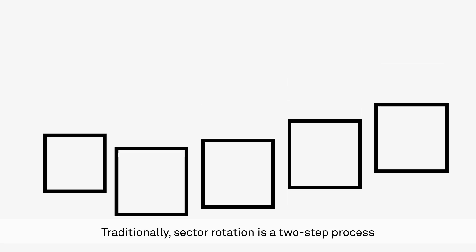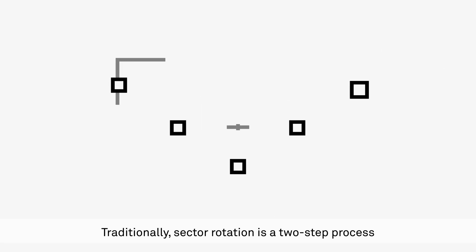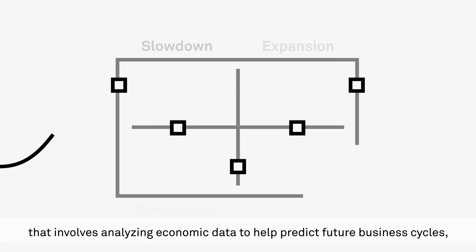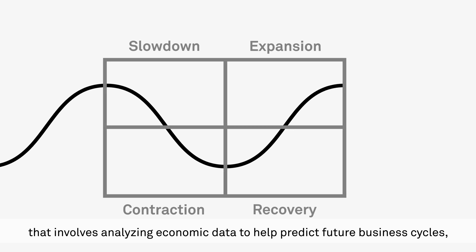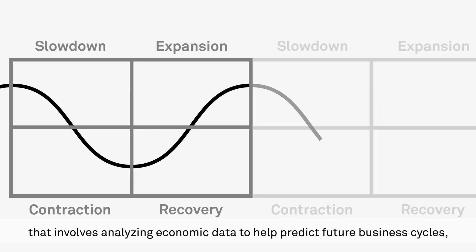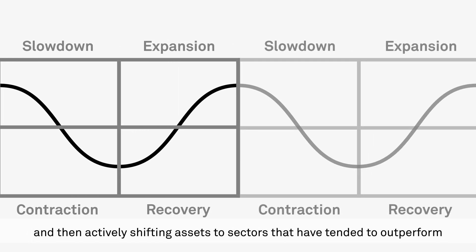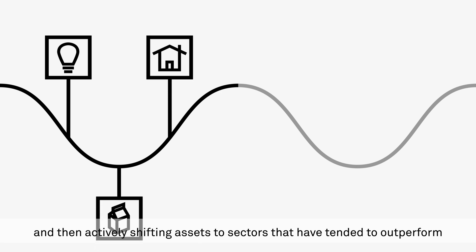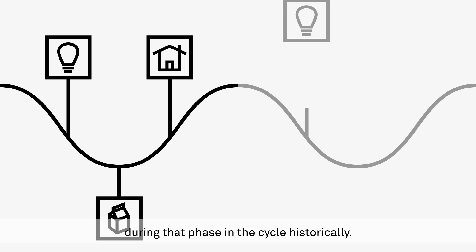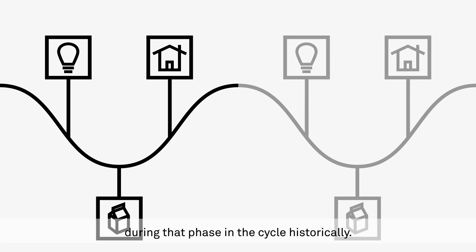Traditionally, sector rotation is a two-step process that involves analyzing economic data to help predict future business cycles, and then actively shifting assets to sectors that have tended to outperform during that phase in the cycle historically.